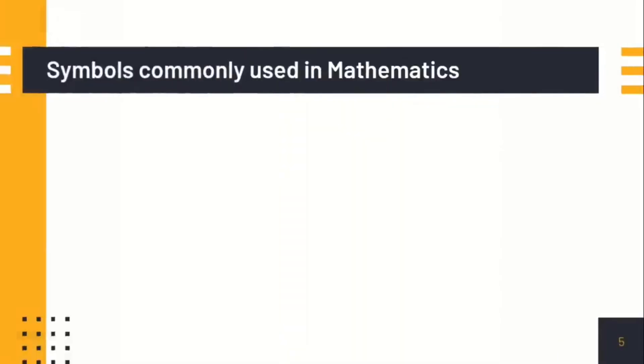Let's try to identify what are the symbols that are commonly used in mathematics. First, we have the 10 digits. The 10 digits are the numbers 0 to 9.